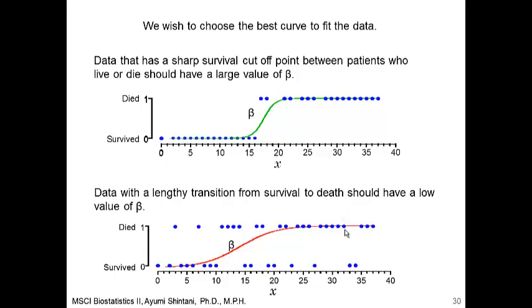Let's think about what this predicted value represents. The outcome changes from 0 to 1, and the predicted value is a continuous variable which moves from 0 to 1, representing the predicted probability of having the event. Therefore, it does not go below 0 or beyond 1.